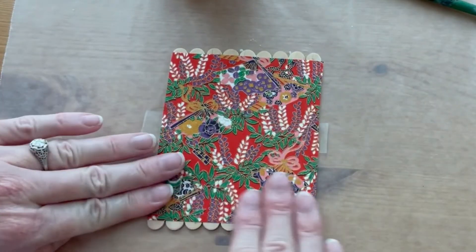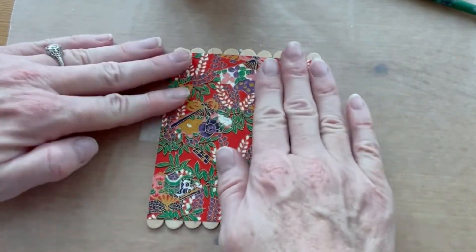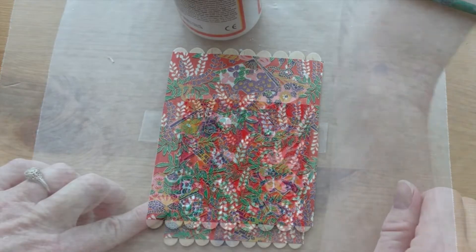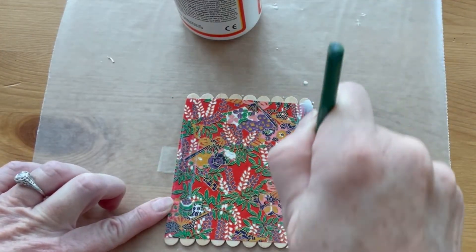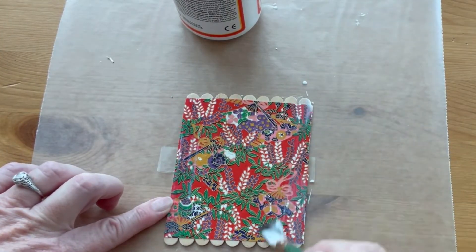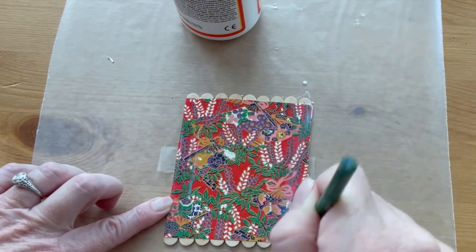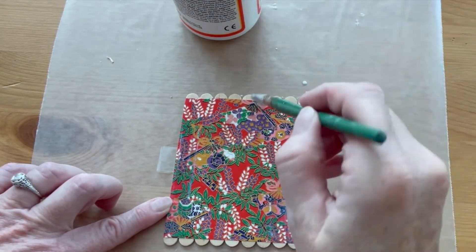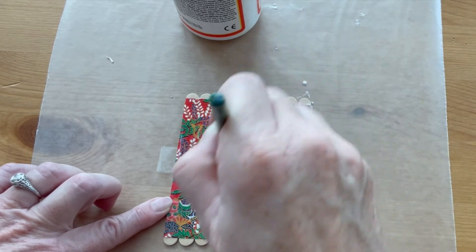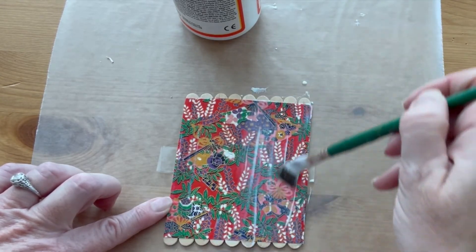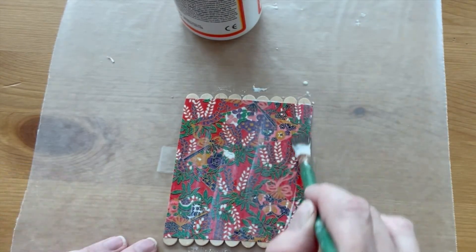Now you're going to put a thin coat of mod podge over the top of the paper. Make sure to get the ends of the sticks as well to seal those edges of the paper down.